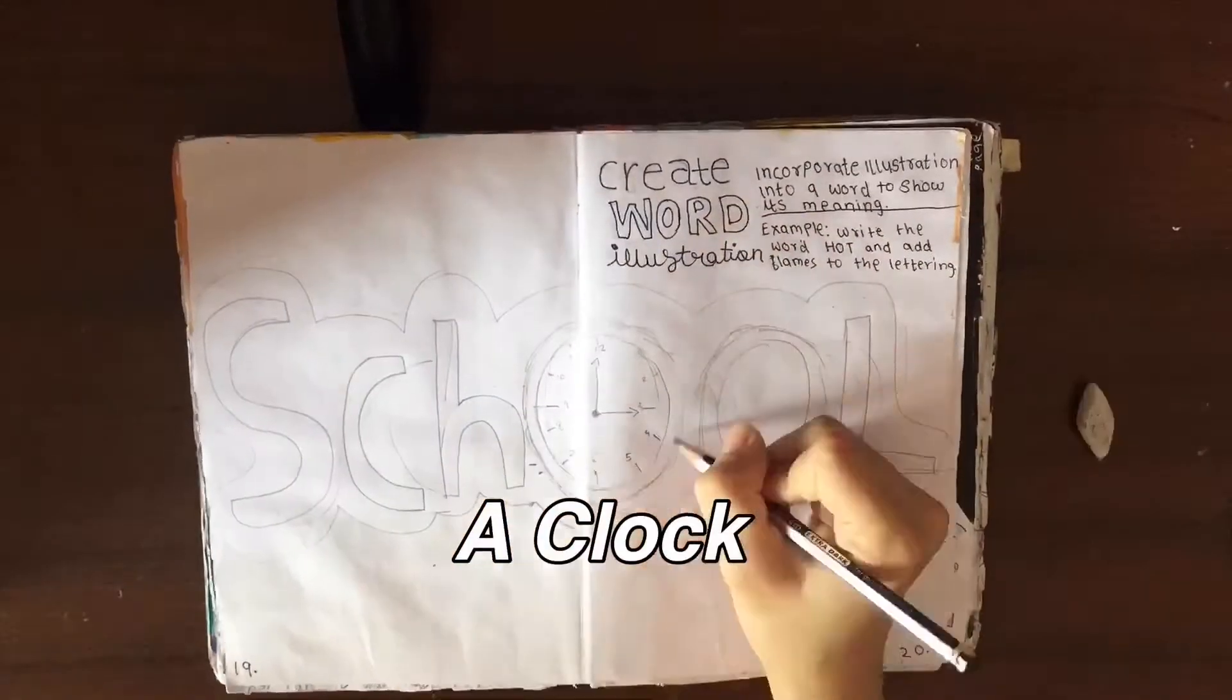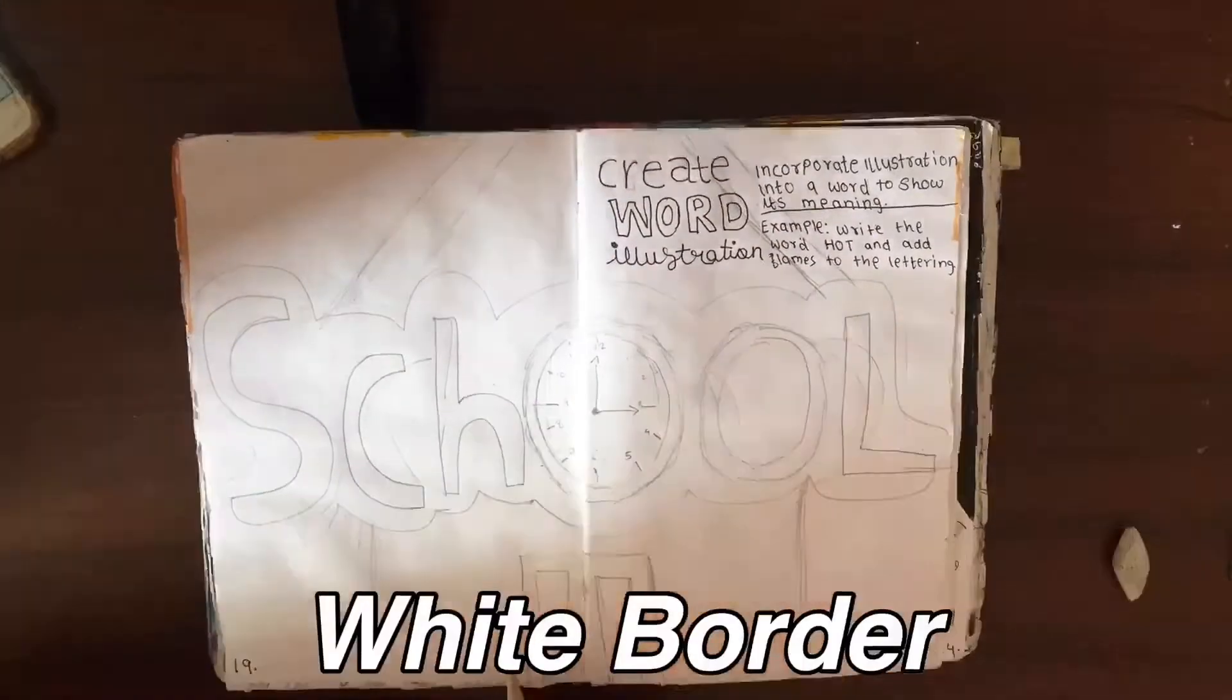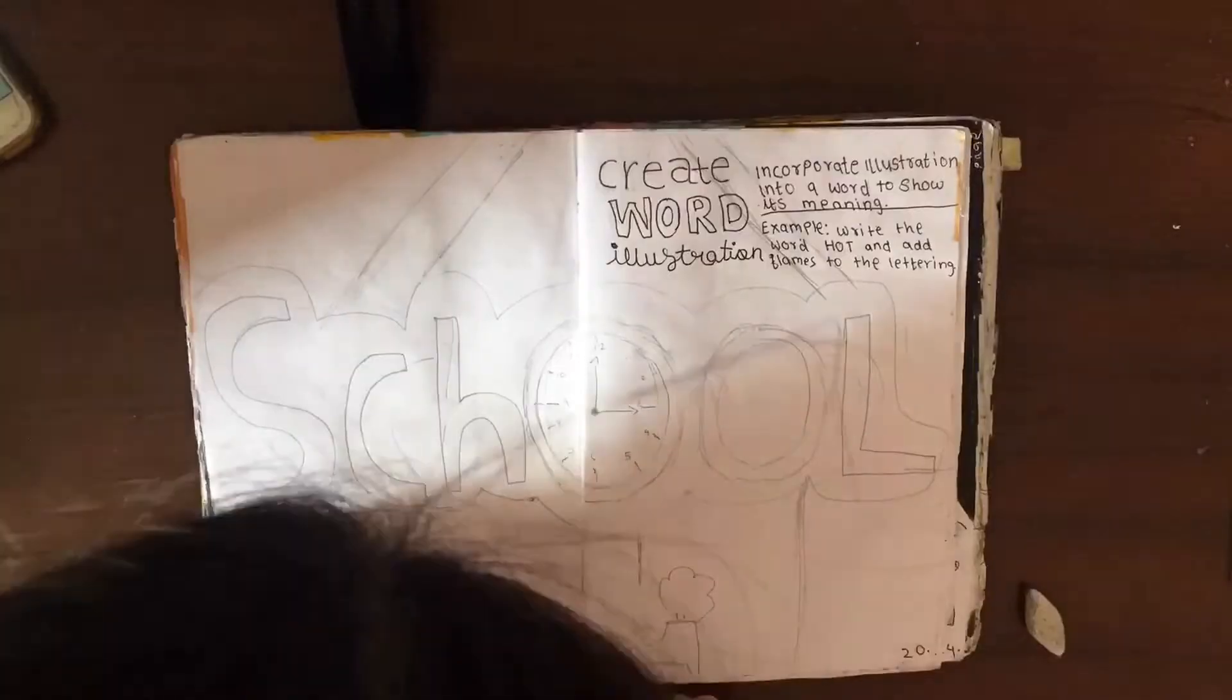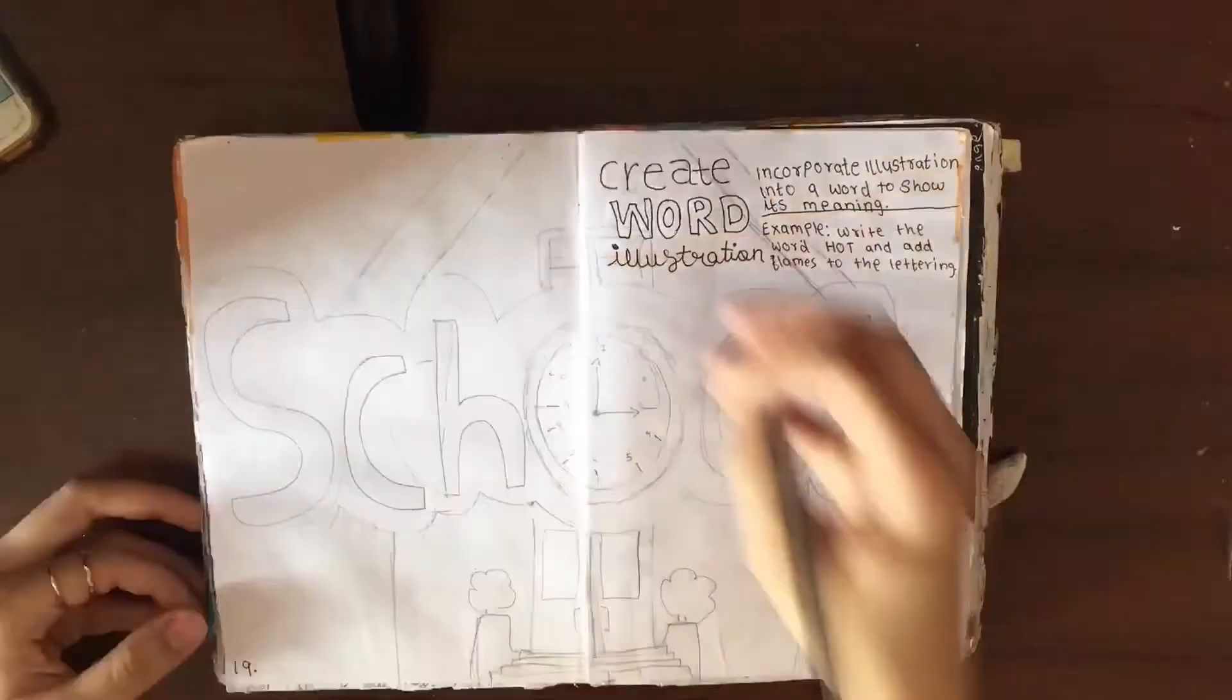Then I started with actually drawing a clock inside one of the O's and then I gave the entire word a white border. And then behind the word I started drawing this school building just to make it look a little bit better and it actually turned out really great.